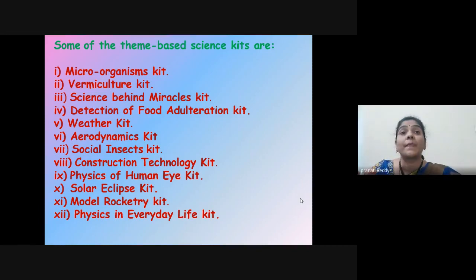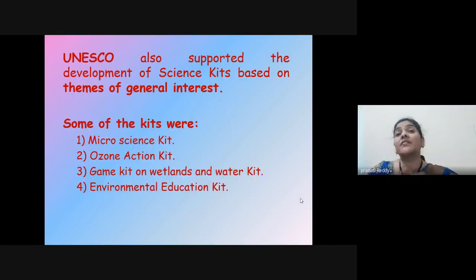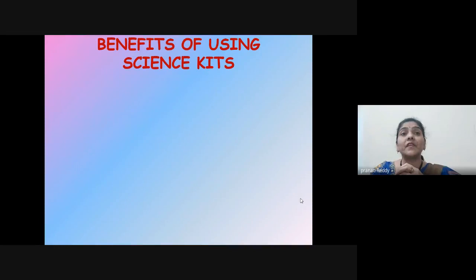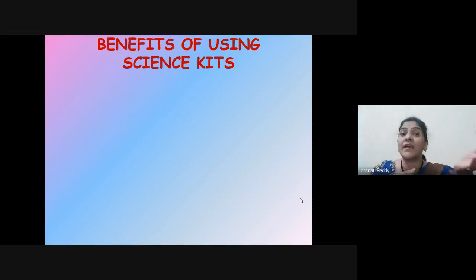Similarly, UNESCO also supported the development of science kits based on themes of general interest. Some examples are: Micro Science Kit, Ozone Action Kit, Game Kit on Wetlands and Water Kits, and Environmental Education Kit. UNESCO has compiled guiding modules to carry out equipment and activities adaptable to local needs. These packages transcend subject boundaries and can be used in mathematics and social sciences too. The theme-based science kits stretch beyond the confines of formal school levels, and some community-based packages involve both adults and children.